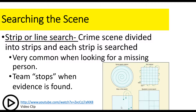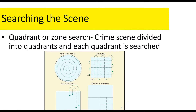The strip search or line search is where the crime scene is divided into strips and each strip is searched. This is great if you have a large area and a lot of people. You've probably seen this on TV — where people in the community come out, get arm's length apart, and slowly search a wooded area or a big field, stopping periodically to mark evidence. That's a strip or line search, and it's very common when investigators are looking for a missing person.